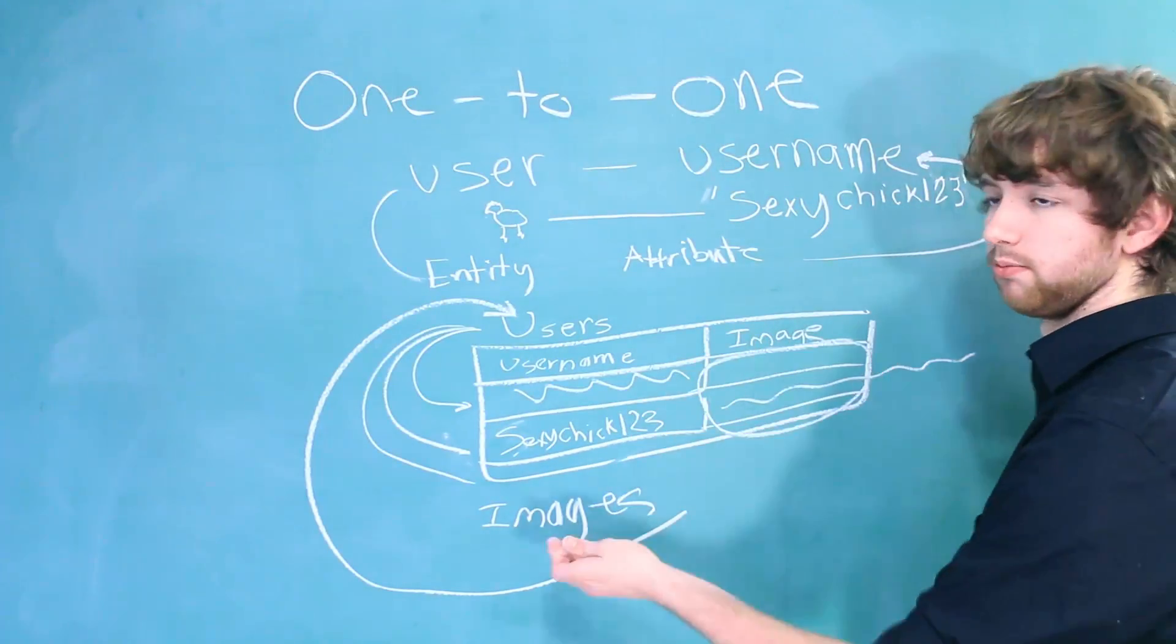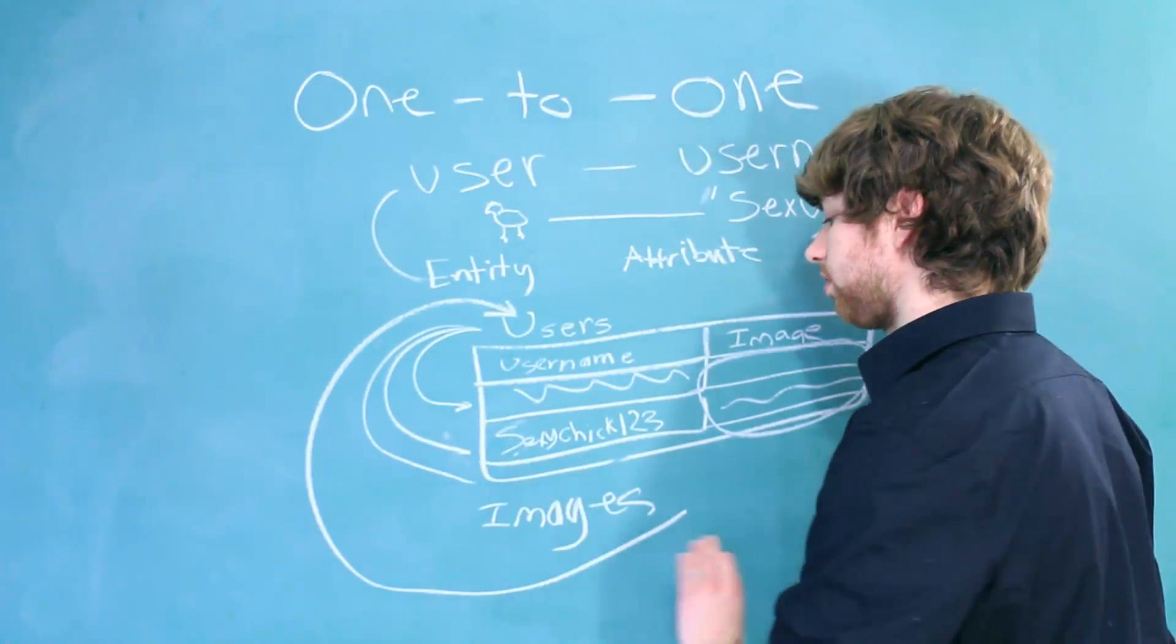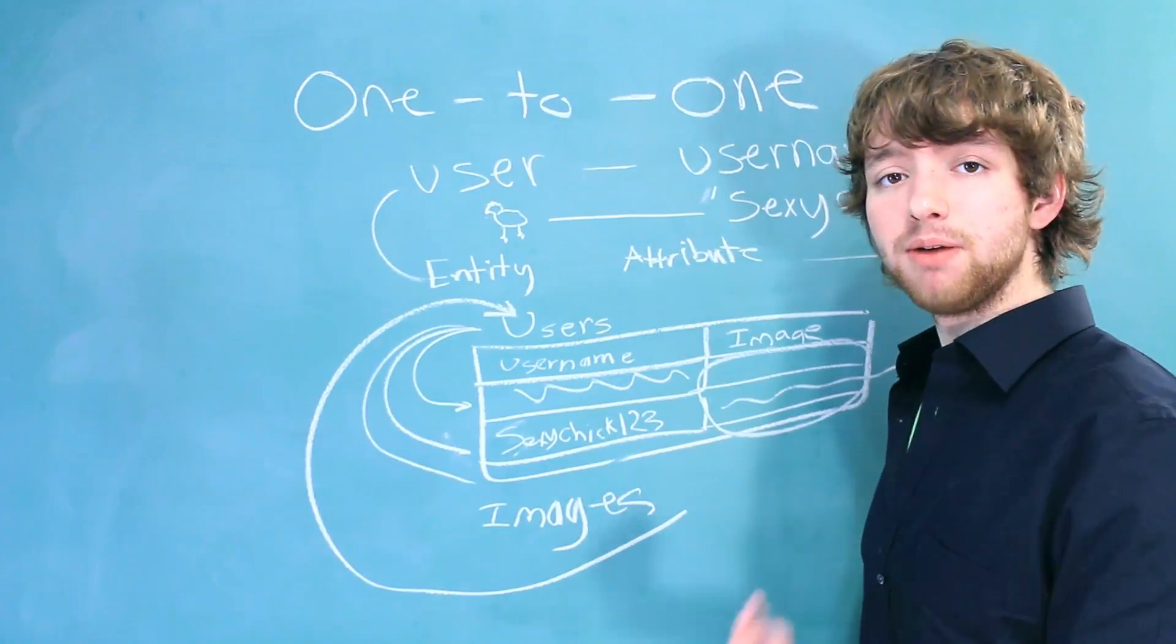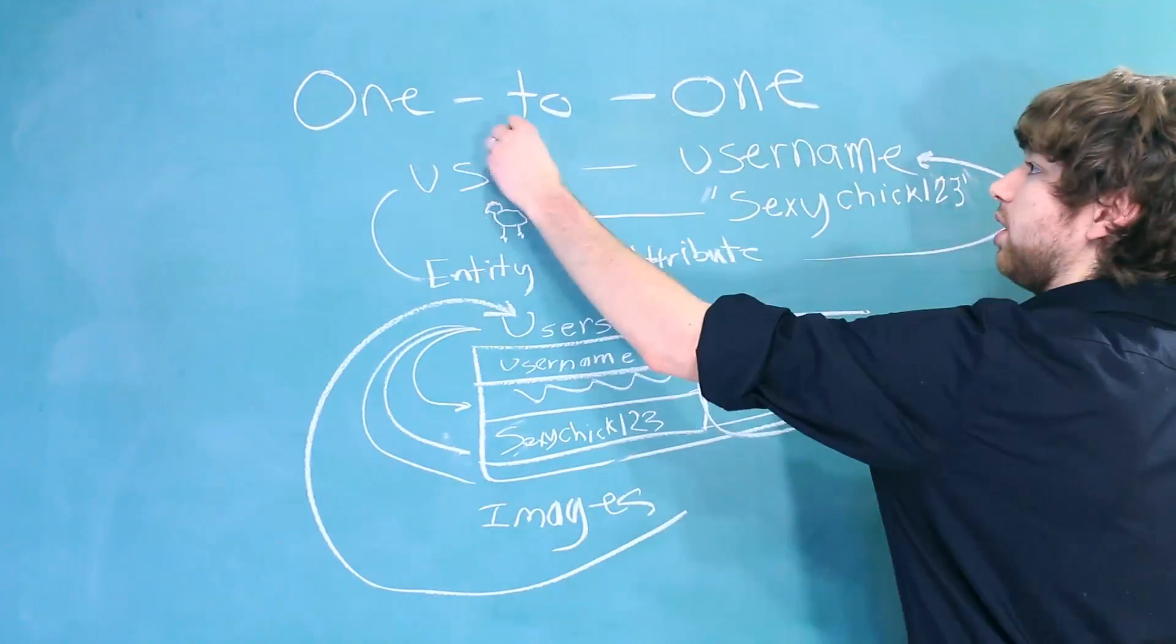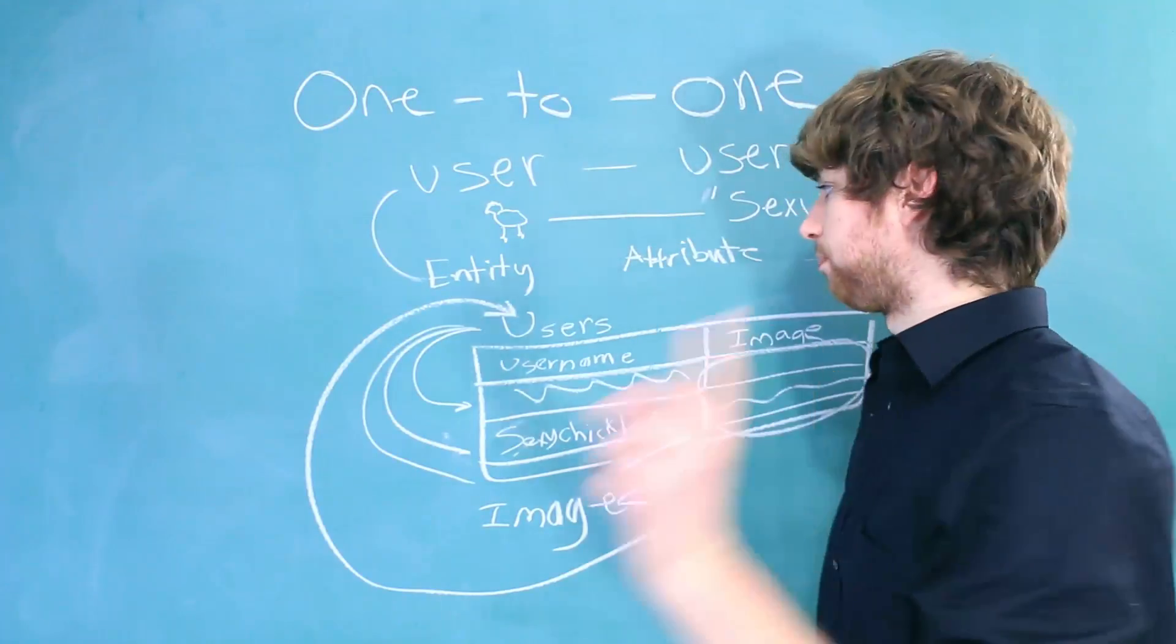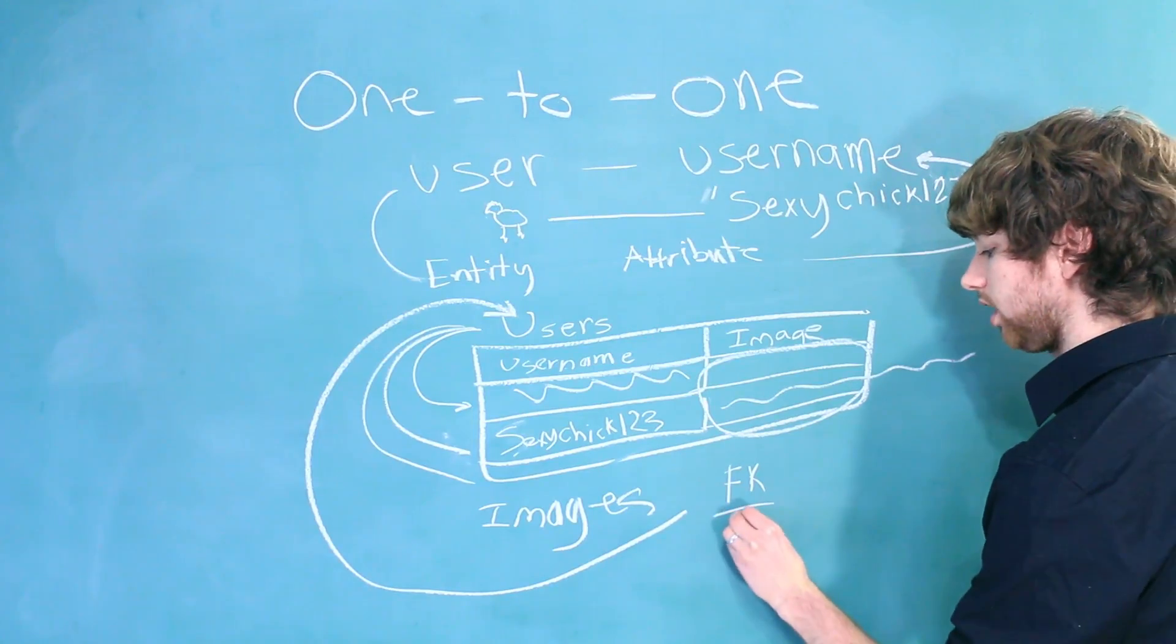Either way would work. You could put it in the table. You could make a new table for it. It all depends. If you really want a table separate for images, that would work fine. The only thing to remember here is that in order for this to be a one-to-one relationship, there only needs to be one image per user. That means if you have a foreign key, every single row would have to be unique.